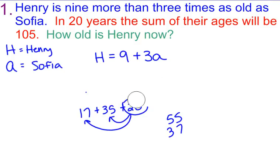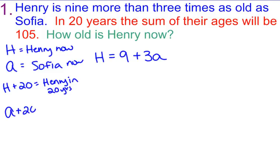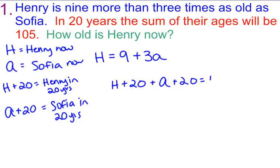So when I write my equation, you could come over here and say, Henry now, Sophia now, well, in 20 years, Henry's going to be H plus 20. So that's Henry in 20 years. And Sophia is going to be A plus 20. So in 20 years, she has to add 20 to her age also. So I would say my equation would be Henry plus 20 years plus Sophia plus 20 years would equal 105.